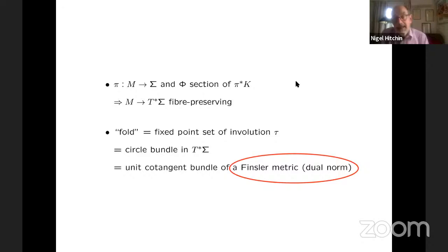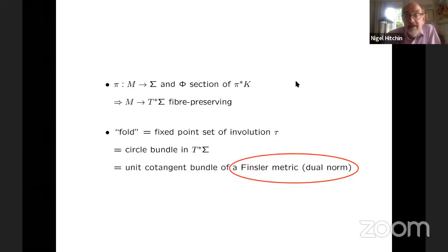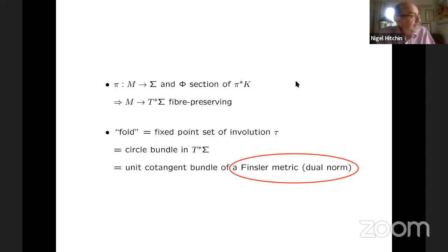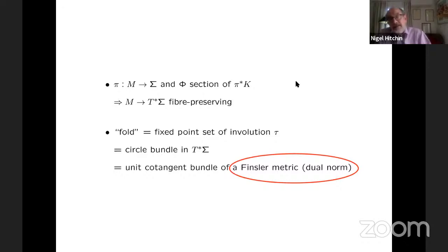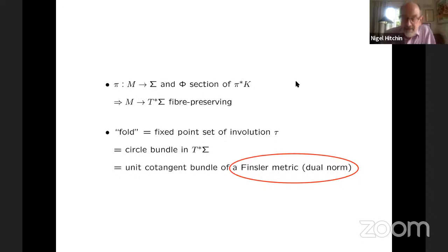So this construction indirectly gives us a Finsler metric. And if it's a small deformation from the one coming from hyperbolic space, then it'll have negative curvature. So there's a chance that these metrics generated by Biquard might help to fill out the space of representations into SL(∞,ℝ). The trouble is that means you've got to try and calculate things.